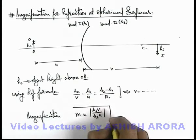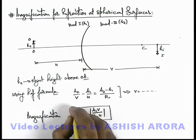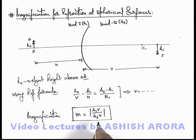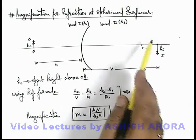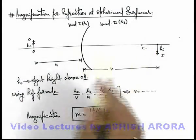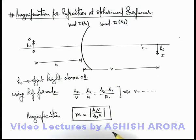You can recall that in case of reflection by spherical mirrors, the value of magnification was given as v by u. So here we write μ1v by μ2u, and I'm taking modulus because I don't need the sign of magnification, as here we are obtaining the orientation of image by using the nature of object and image.